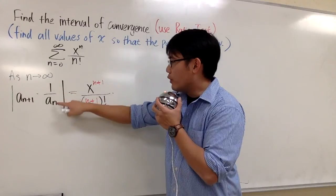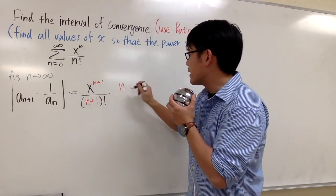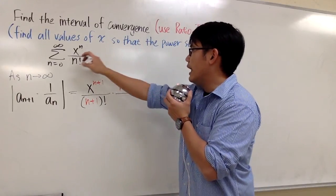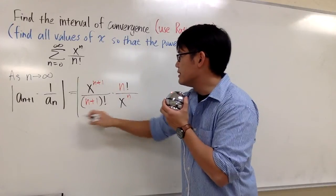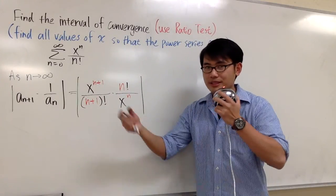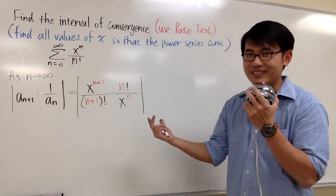Times 1 over a_n, namely the reciprocal of the original. So we will have n factorial over x to the n power. And then this is still in the absolute value. And then we don't get to just take out the absolute value, because we don't know what x is. It can be negative numbers. Okay?